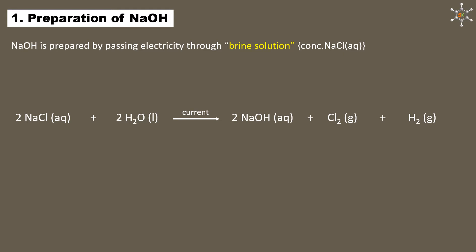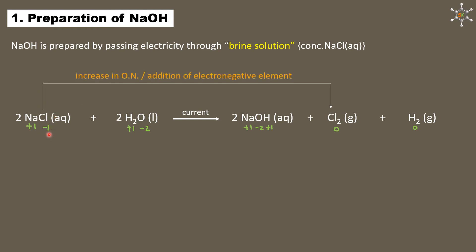To understand this reaction, we assign oxidation numbers: sodium in NaCl is +1, chlorine in NaCl is −1. In NaOH, sodium is +1, oxygen is −2, hydrogen is +1. In Cl2, chlorine is 0, and in H2, hydrogen is 0. The oxidation number of chlorine increases from −1 to 0, meaning sodium chloride has undergone oxidation to give Cl2 as the oxidized product.